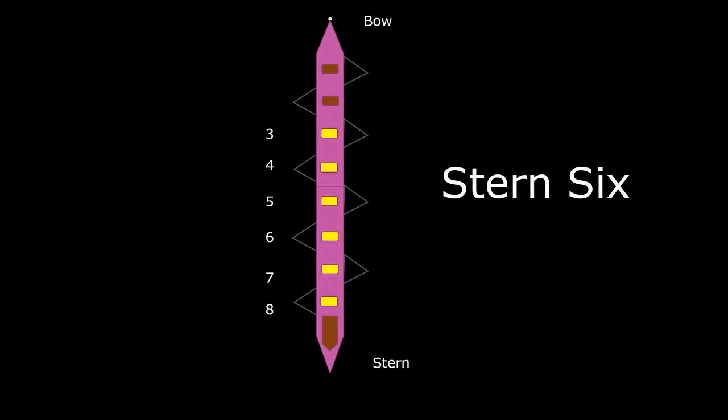You can see all the seat numbers associated with those. Next, the middle four is three, four, five, and six. The middle pairs is what they're also referred to.